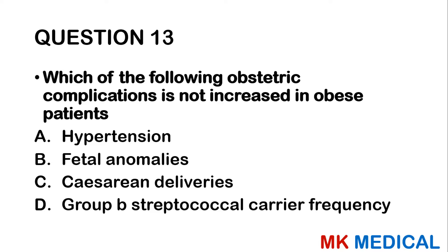Question 58: Asymptomatic myomas: A — need follow-up. B — do not need removal if small. C — need immediate removal because they will grow. D — all of the above. E — A and B. If there are no symptoms and the fibroid is small, don't remove it. Simply perform annual examinations, regular check-ups, and ultrasounds to monitor progress. Immediate removal is not indicated. The answer is E — A and B.